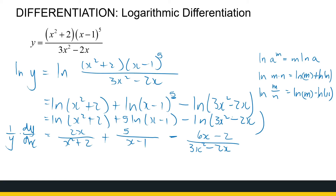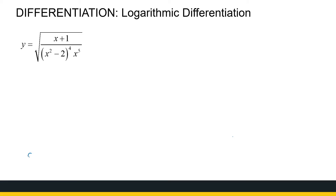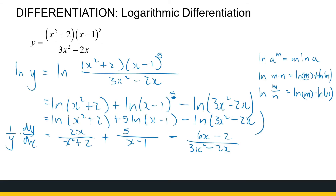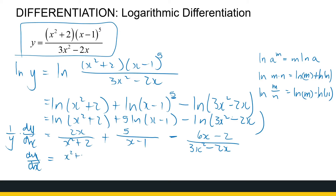We've completed the differentiation. Now we just need dy/dx on its own. I multiply both sides by y to get rid of the 1/y factor. Since y was given originally as a function of x, I rewrite y as the original function, and then multiply by the derivative expression on the right-hand side. We can do some simplifications if needed.